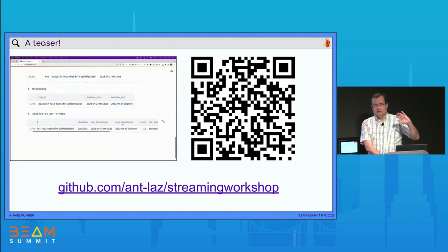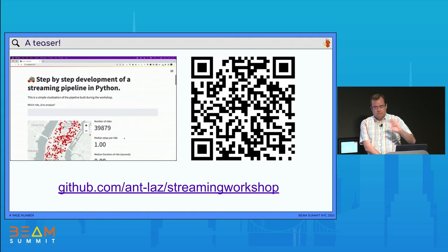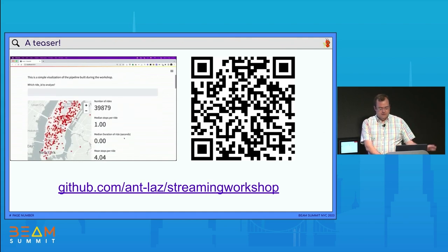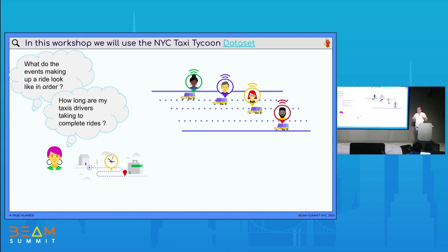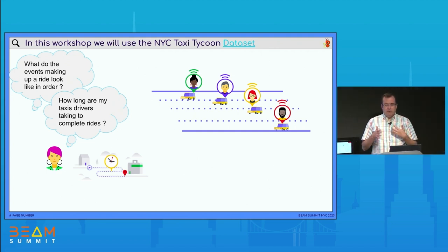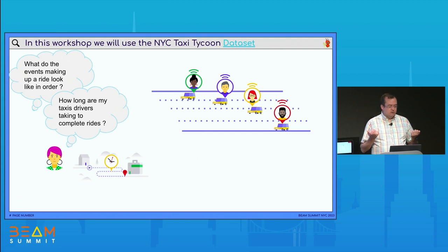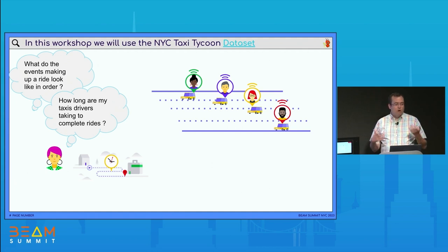Don't look at the repo too much, because in some parts you will find the solutions and we don't want you to see them just yet. So what's the problem? The taxis in New York City are sending telemetry back to some service every once in a while — every few seconds some data — and we are going to be recovering the sessions, the taxi trips, from this data, and doing some analysis on top of it.